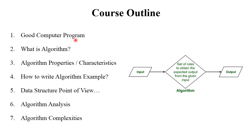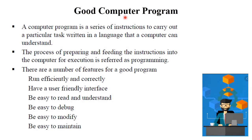First, what is meant by a good computer program? A computer program is a series of instructions to carry out a particular task, written in a language that a computer can understand. We write a computer program in our own natural language or English language, but computers understand each and every program in binary language or binary format. That's why we use a different compiler or interpreter. The process of preparing and feeding the instructions into the computer for execution is referred to as programming — sequential instructions that carry out a particular task to deliver a particular output.